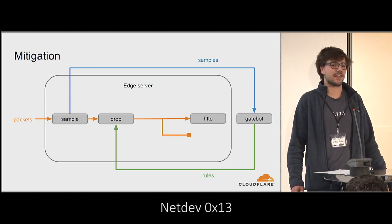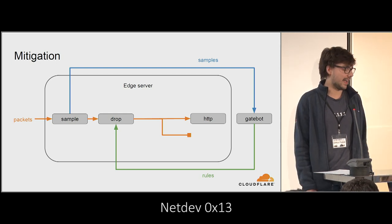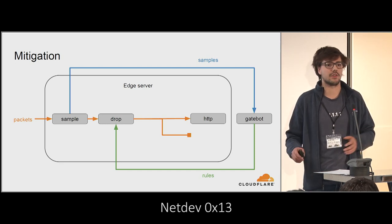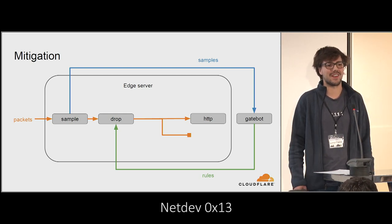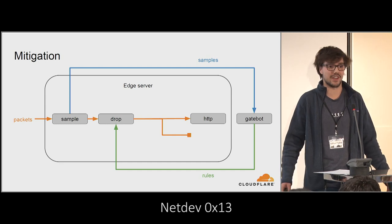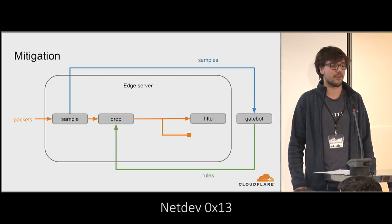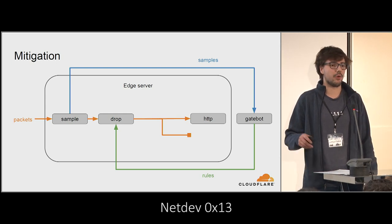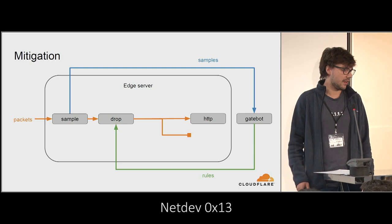Our mitigation pipeline has three major steps. Packets come in, hit an edge server over Anycast. We sample incoming packets and send a small fraction to a centralized system called GateBot. GateBot aggregates all the traffic and figures out which traffic is malicious. From that, we generate rules describing which packets are attack packets and push them back to the edge. It's important to note that we need to sample packets before we drop them, to keep the feedback loop going — so we know if the attack is still ongoing or not.